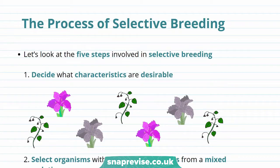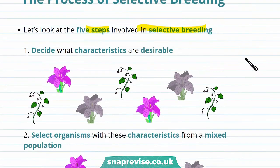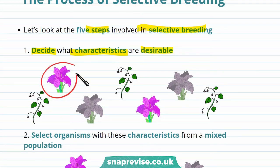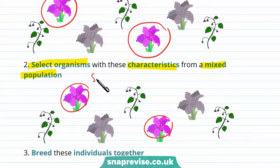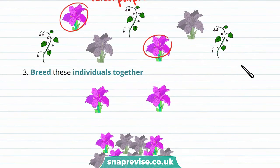So now let's look at the five steps involved in selective breeding. The first step is to decide what characteristics are desirable — in this case, the purple characteristic is the desirable one. The next step is to select organisms with these characteristics from a mixed population, so you select the purple ones. Then you breed these individuals together.